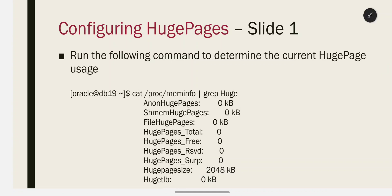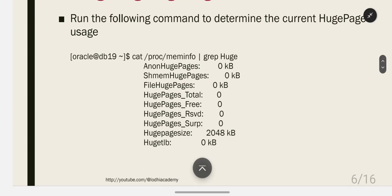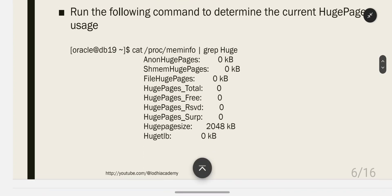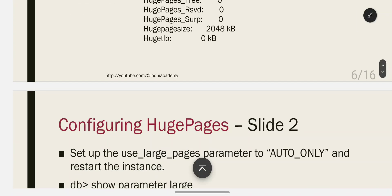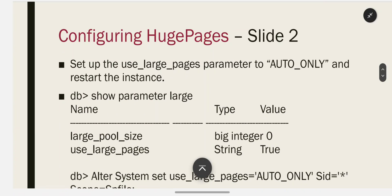Run the following command to determine the current huge page usage: cat /proc/meminfo | grep huge. You can see that HugePages_Total is zero, HugePages_Free is zero, and HugePages_Rsvd is zero, meaning huge pages are not currently in use.